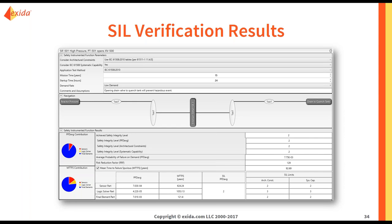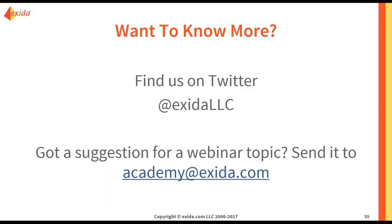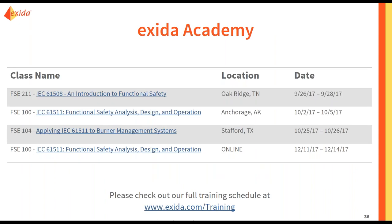So that is, in a nutshell, what we talked about today. If you want to know more, you can find us on Twitter at @ExidaLLC. If you have a suggestion for a webinar topic, please send it to academy@exida.com. We love to get your suggestions — we want to know that we are providing value to you by doing these webinars. We also have a few courses coming up: FSE 211 in Oak Ridge, Tennessee in September; FSE 100 in Anchorage in October; FSE 104 in Stafford, Texas in October; and FSE 100 online in December. You can check out our full training schedule at www.exida.com/training.